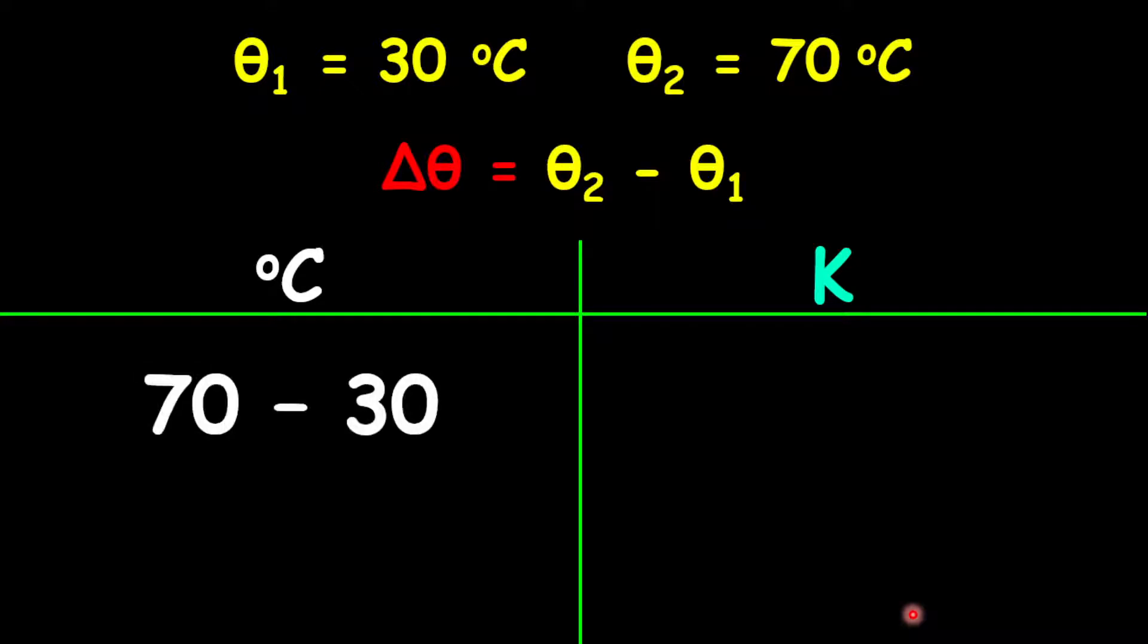For degrees Celsius, it is 70 minus 30, while for Kelvin, it is 343 (which is 70 degrees Celsius in Kelvin) minus 303 (which is 30 degrees converted to Kelvin).